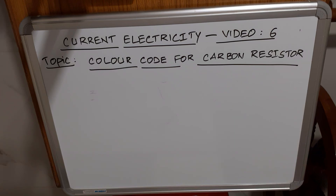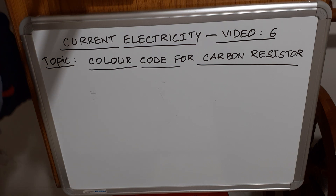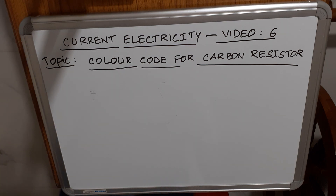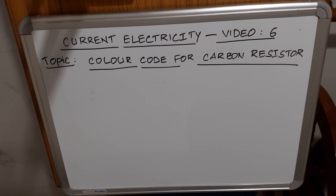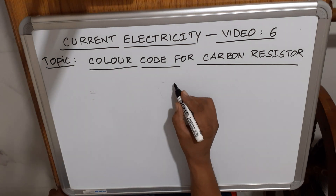In the chapter Current Electricity, this is video number six. The topic is color code for carbon resistors. Resistance and related concepts have been discussed in the previous videos — resistance comes from Ohm's Law.